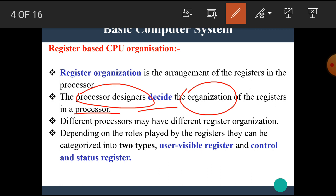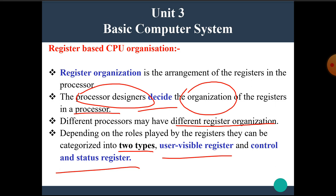Different processors may have different register organization. Depending on the role played by the registers, they can be categorized into mainly two types: user visible registers and control and status registers.